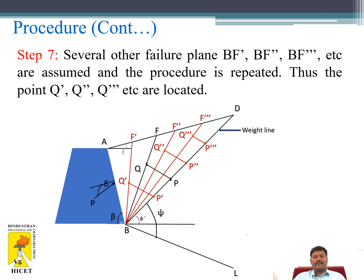Step 7: Several other failure planes BF', BF'', BF''' etc. are assumed and the procedure is repeated. Thus, the points Q', Q'', Q''' etc. are located.